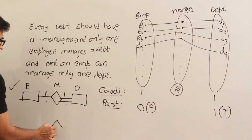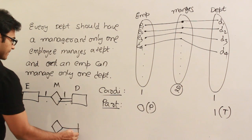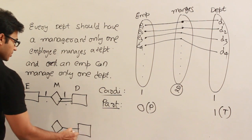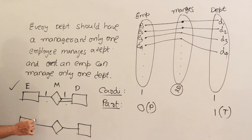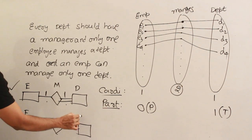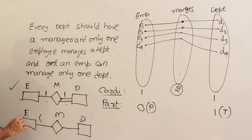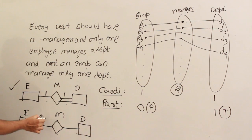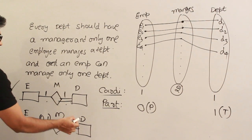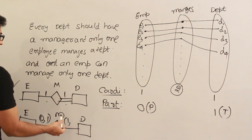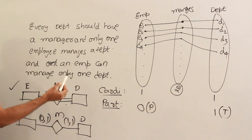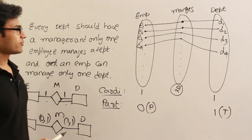What about the min-max representation? In min-max notation we don't need to use single and double lines at all. What is the minimum and maximum participation of employee? Minimum is zero, maximum is one — so (0,1). What is the minimum and maximum participation of department? Minimum is one, maximum is one — so (1,1). This is an example of a one-to-one relationship.